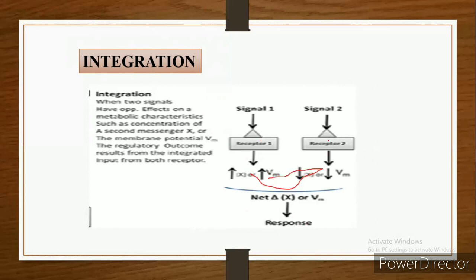The regulatory outcome results from the integrated input of both of these two receptors. Got it? When these two signals bind to two receptors but show opposite effects on the metabolic characteristics, the output is the same response. This is about integration. Different signaling pathways converge with each other at several levels, generating a wealth of interactions.